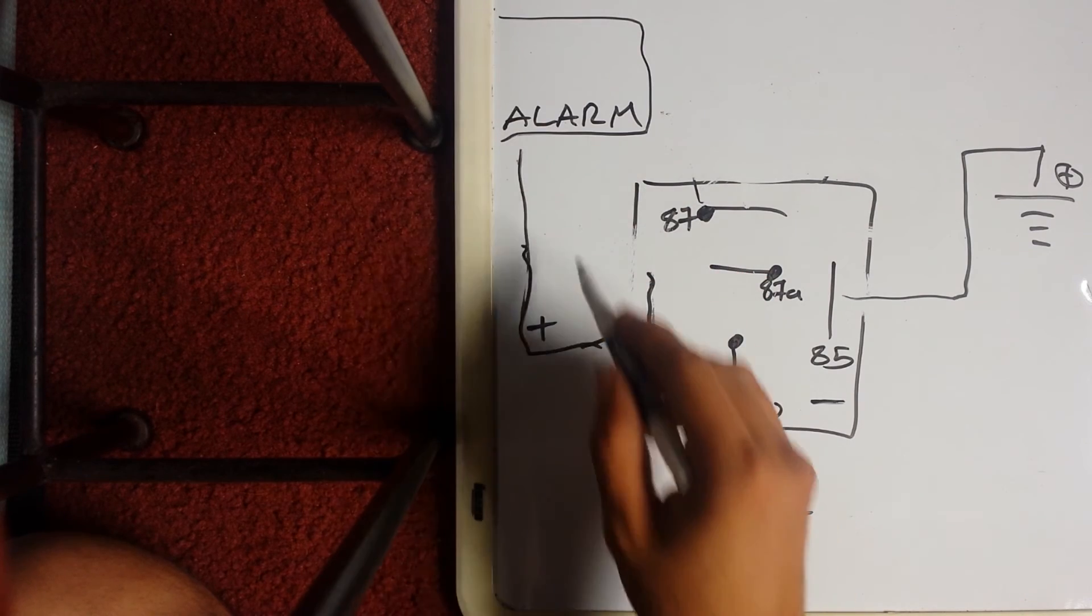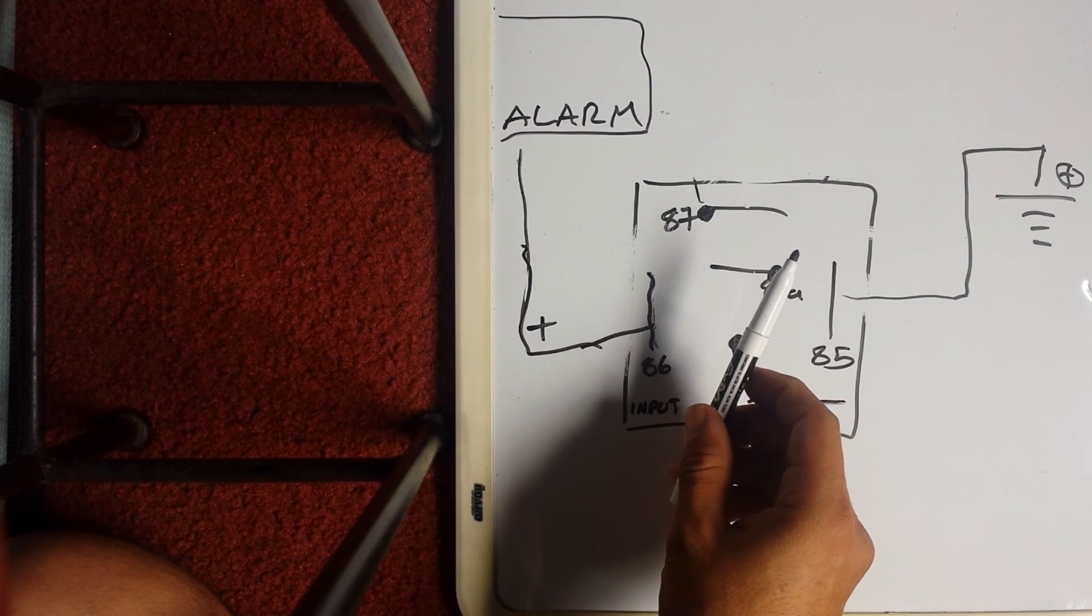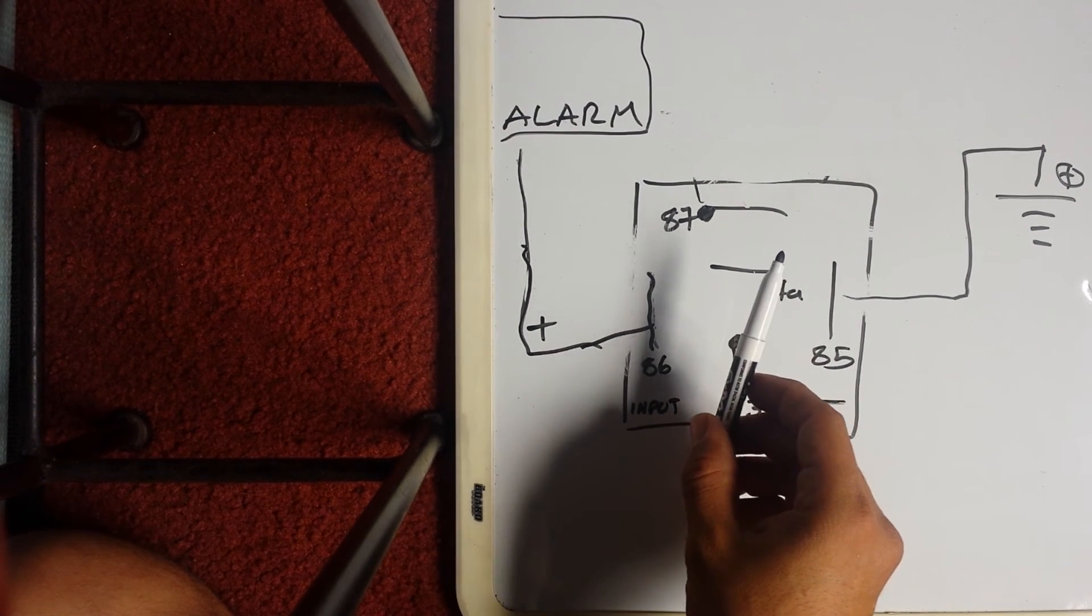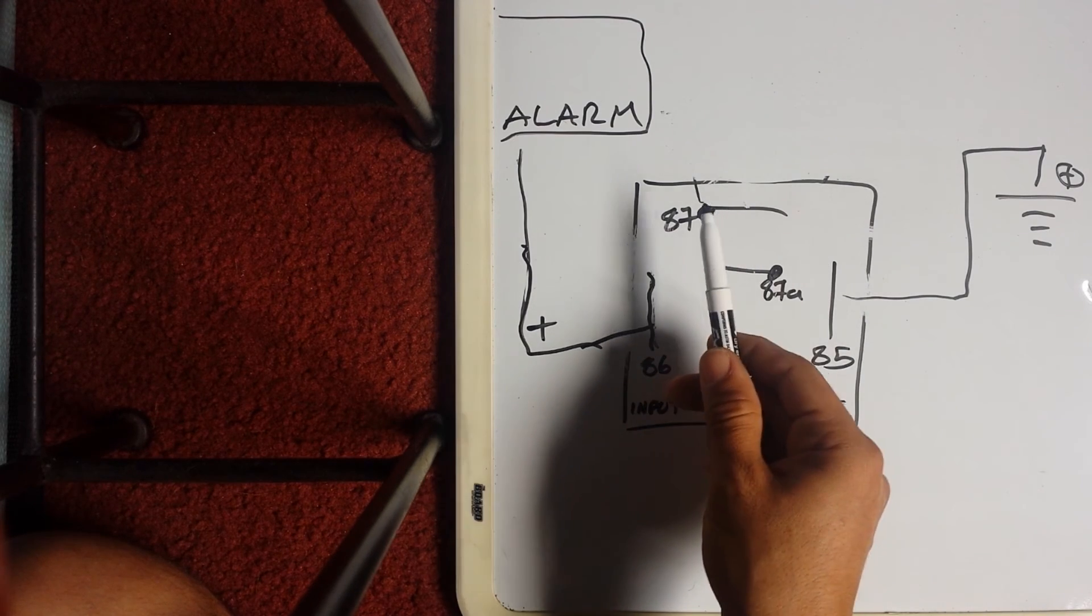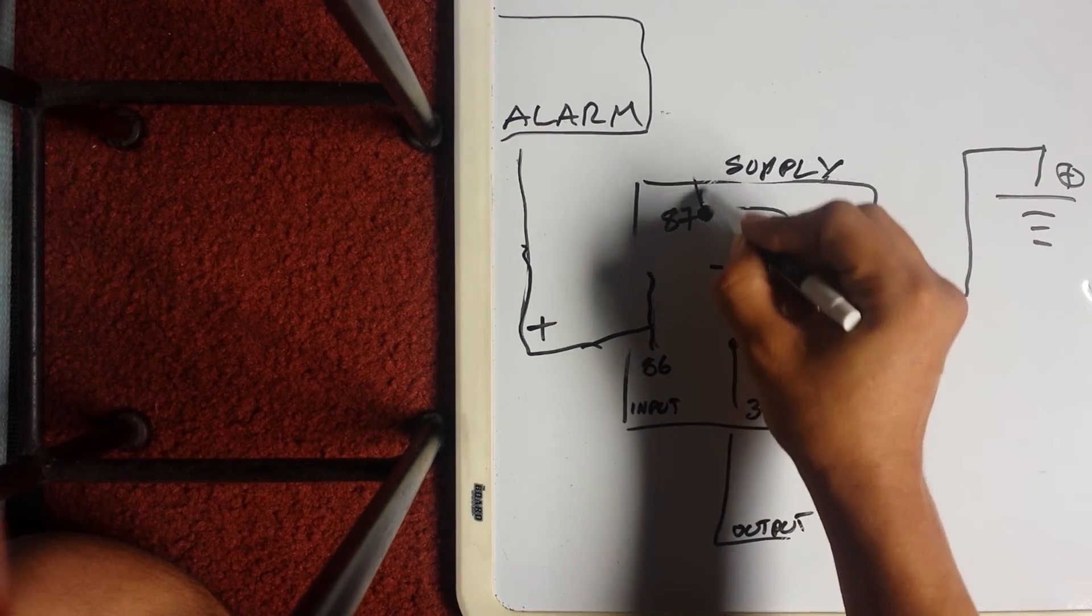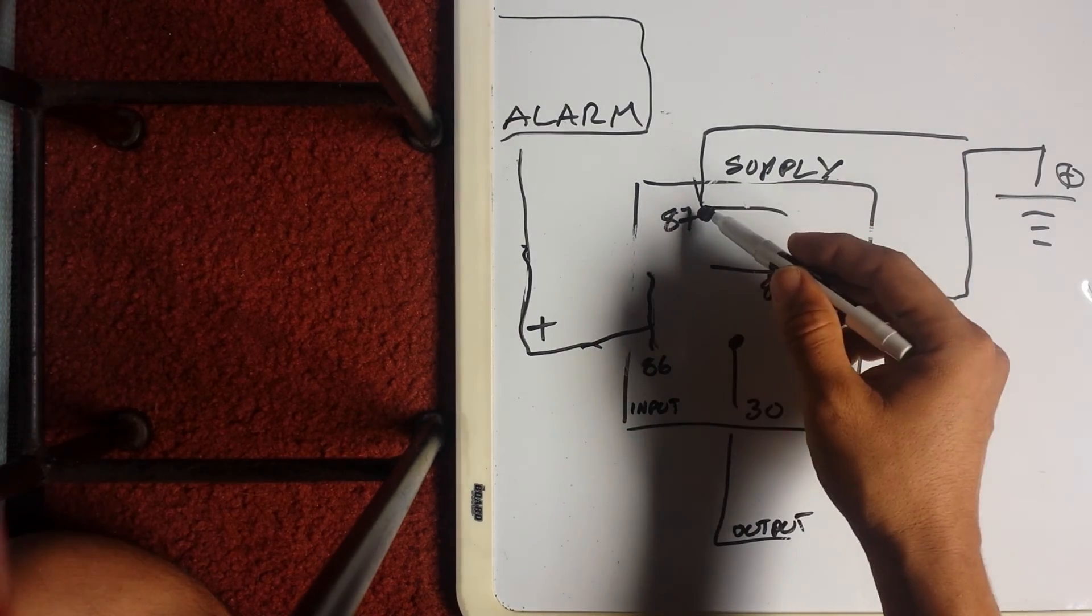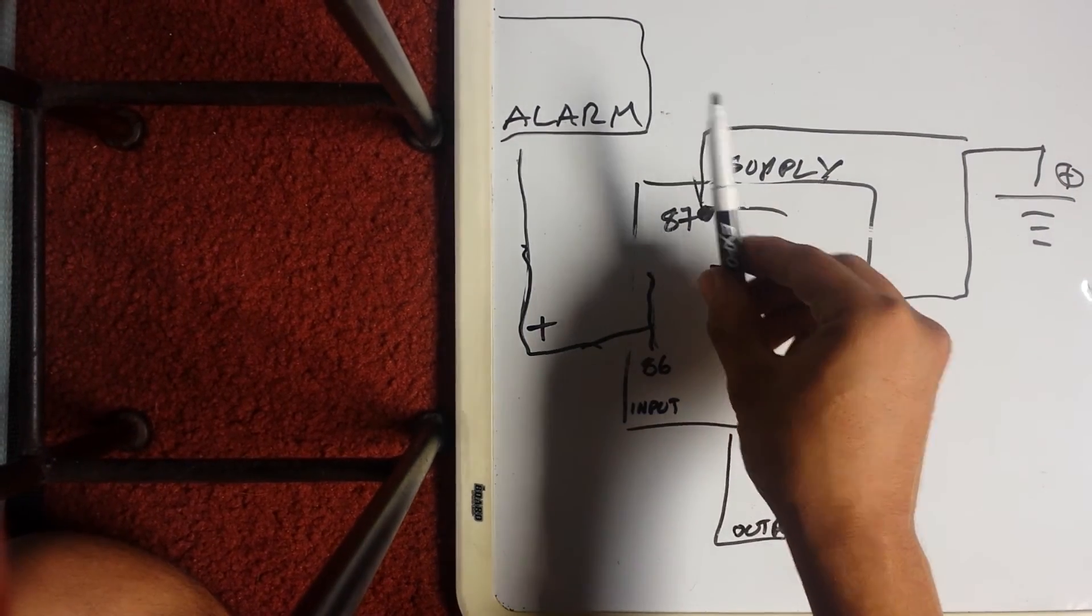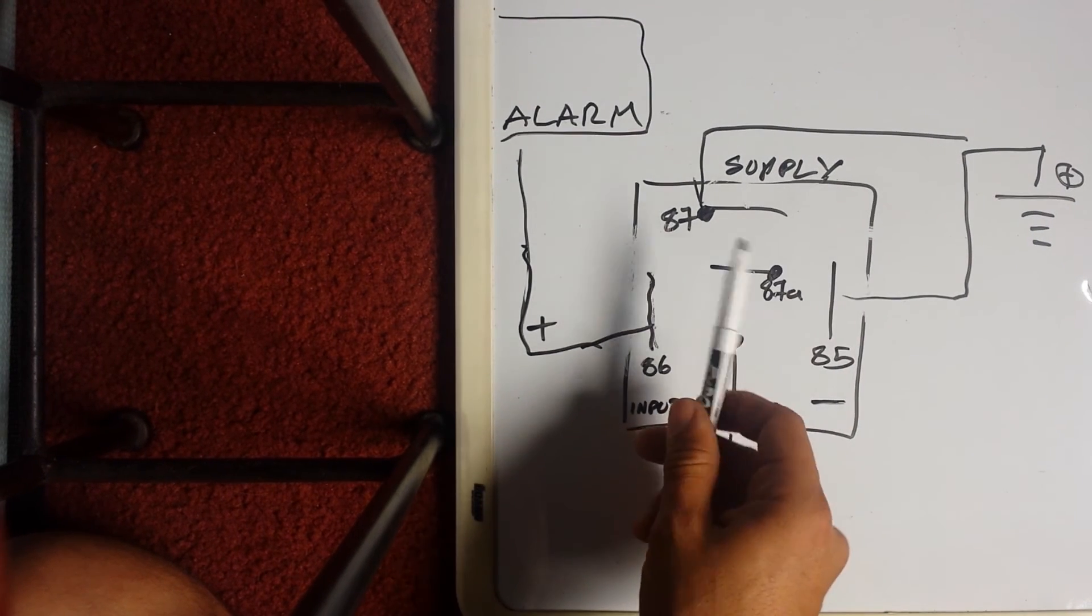That wire basically goes to 85. Now every time it gets positive, because it's already resting at negative, every time it gets a positive pulse it works. Positive to negative, same thing, this is our supply. Hook up 87 to ground. Now every time it clicks, you're going to be getting negative down here.